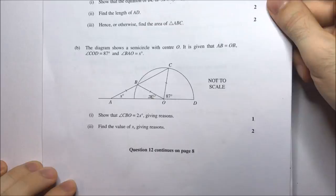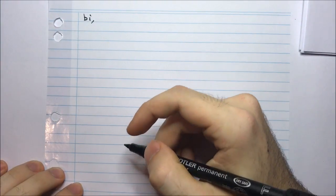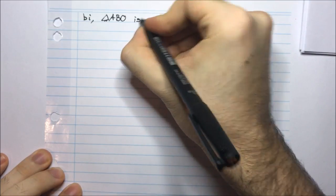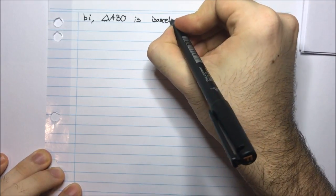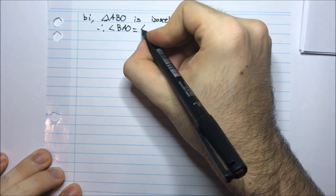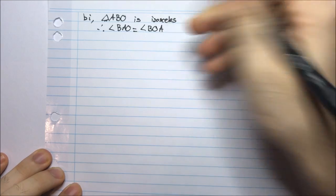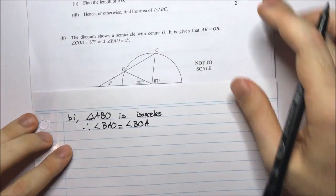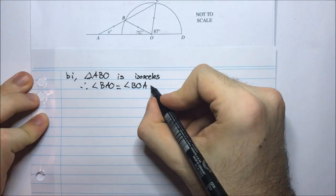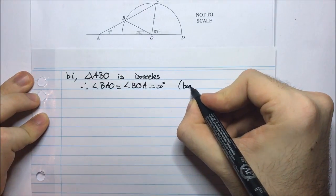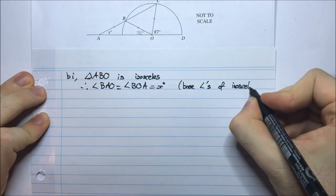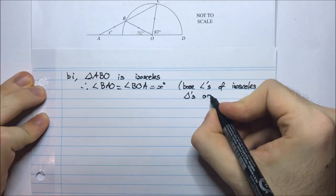I need to present the argument to the marker. Triangle ABO is isosceles, therefore angle BAO equals angle BOA, which equals X degrees. The reason is that base angles of isosceles triangles are equal.